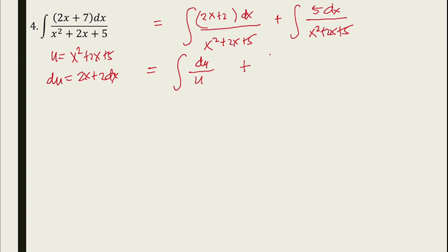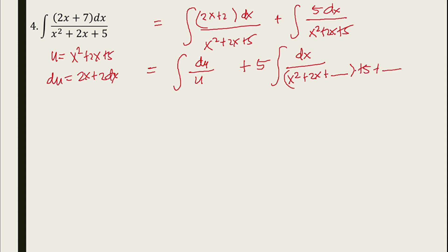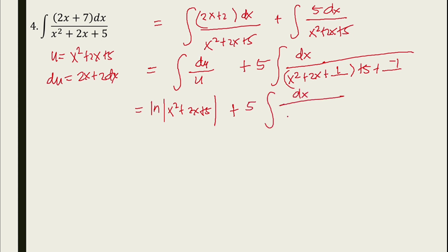The first part — integral of (2x plus 2) dx over (x squared plus 2x plus 5) — is du/u, giving ln|x squared plus 2x plus 5|. For the remaining 5 dx over (x squared plus 2x plus 5), we use completing the square: x squared plus 2x plus 1 minus 1 plus 5, which gives (x plus 1) squared plus 4, i.e., (x plus 1) squared plus 2 squared.